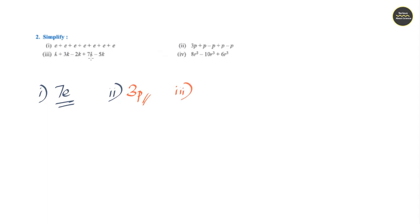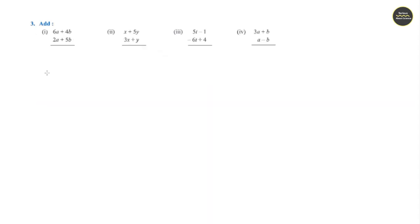Question 3: k plus 3k minus 2k plus 7k minus 5k. After adding these, the answer is 4k. Question 4: 8r cube minus 10r cube plus 6r cube minus 2r cube. Answer would be 4r cube.